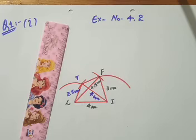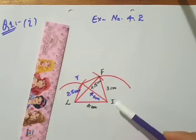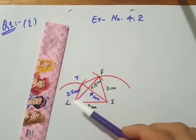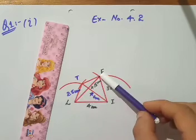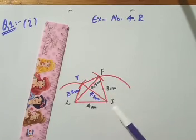So we have constructed quadrilateral LIFT. Side IF is 3 centimeters, side LT is 4 centimeters, and diagonal LF is approximately 5 centimeters.